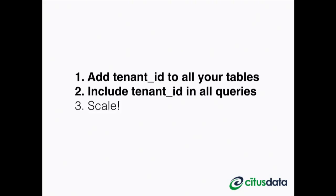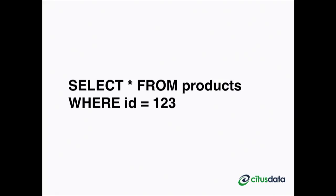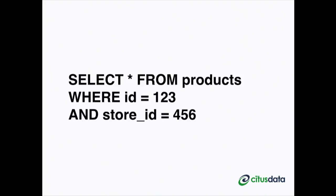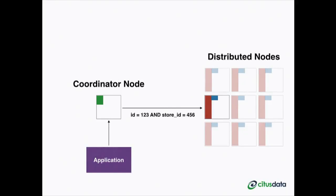The system needs to know which tenant you're looking for, and it's quite expensive to search through all the data to find it. Without the store ID, a coordinator node in Citus goes to all distributed nodes to find the data. But if you include the store ID in the query and shard on it, data for a single store lives on a single node. The coordinator uses a hash function on the store ID to route directly to the correct node — for example, store ID 456 maps to a specific node — rather than querying every node individually.